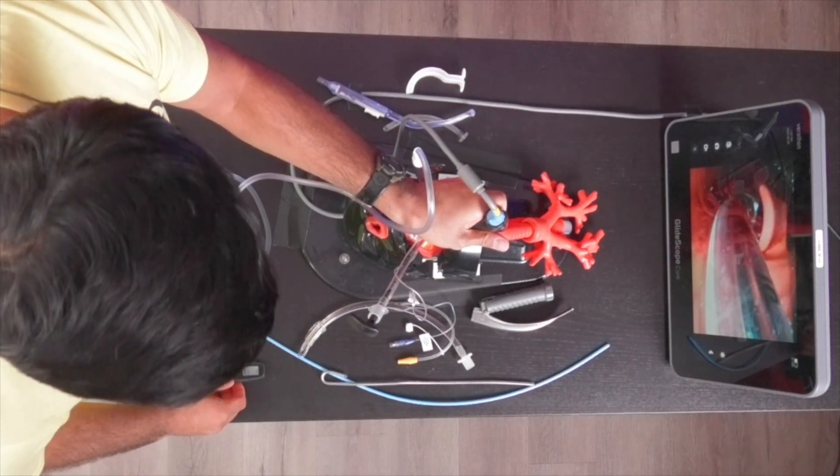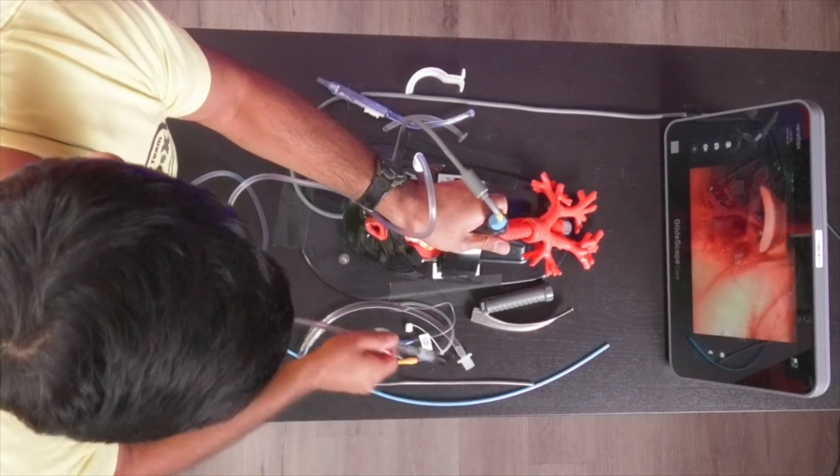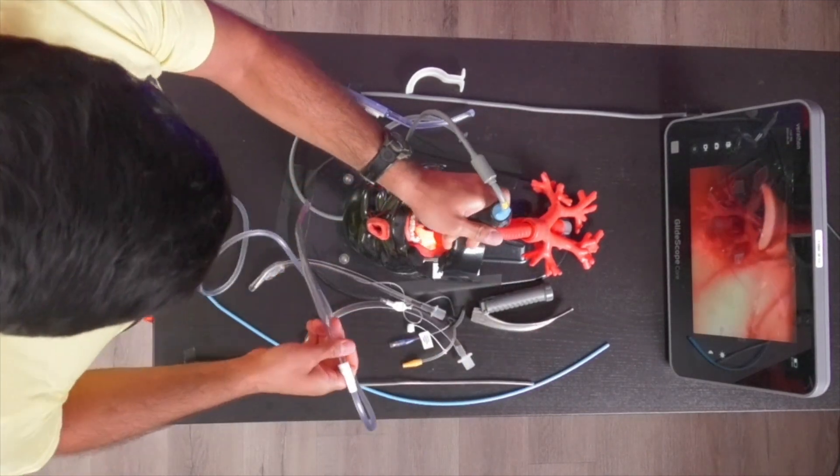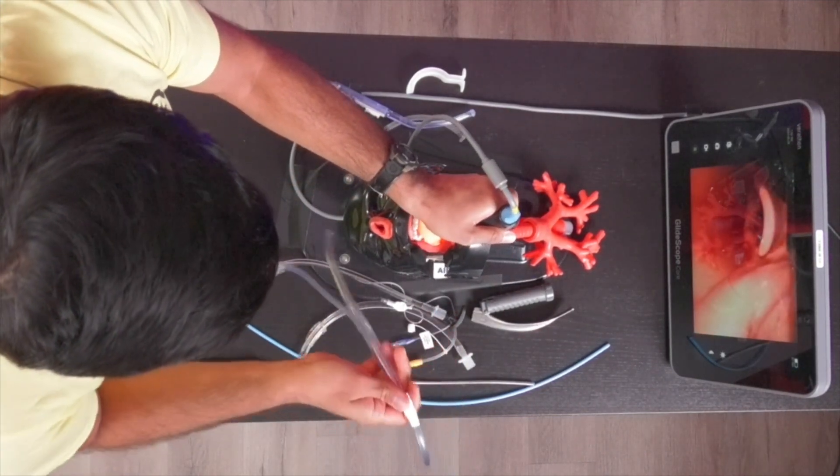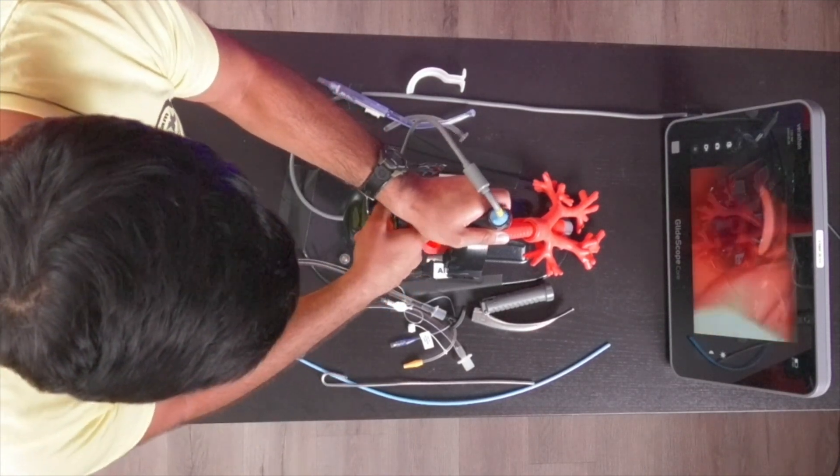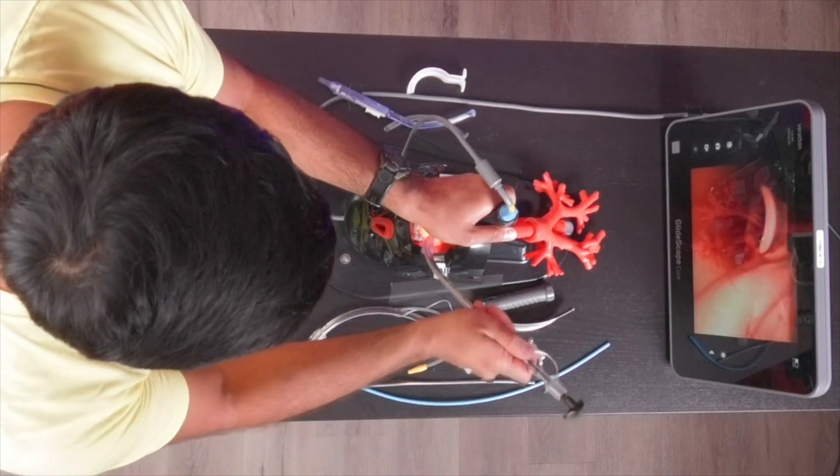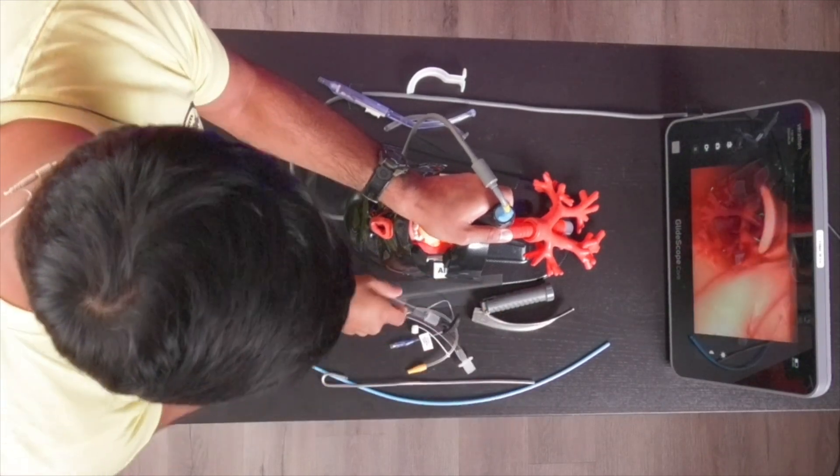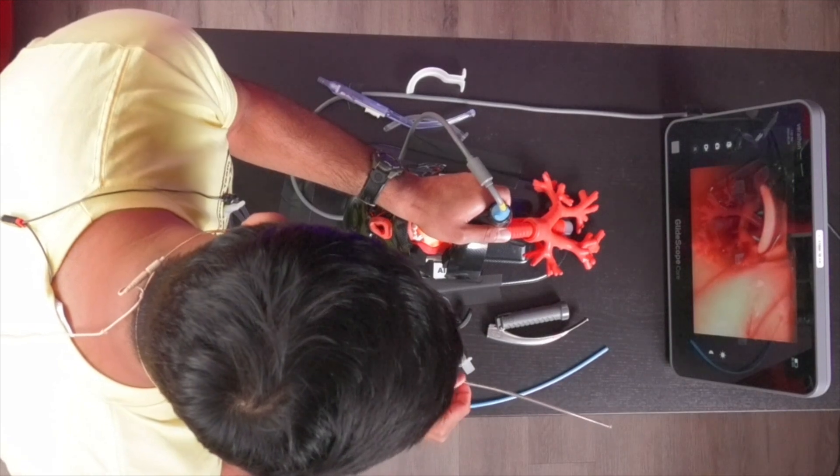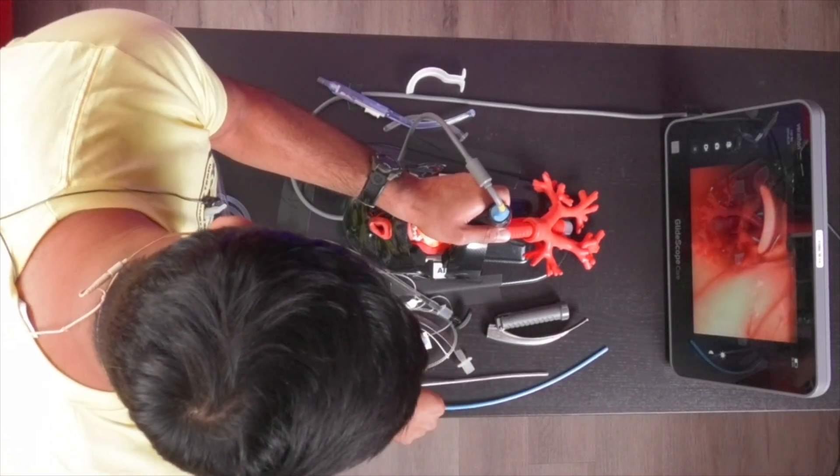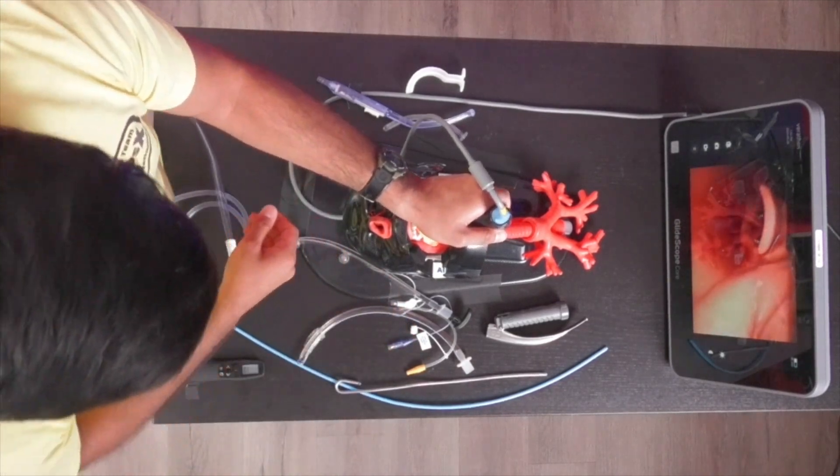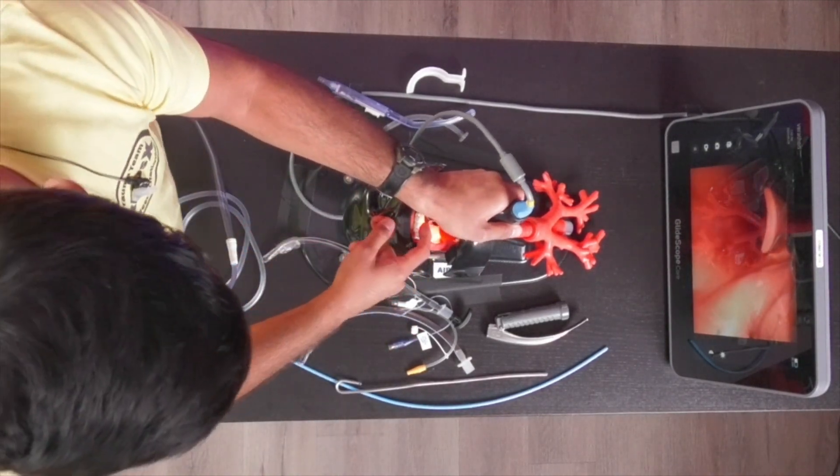There are actually a couple different methods we can use to intubate from this position. The first is just your standard intubation. We're using a hyper-angulated glidescope, so we can intubate just like this. If we're using a direct blade, we're going to use a corresponding malleable stylet bent at maybe 70 degrees. Some people like a hockey stick angle for intubation with a standard geometry blade.